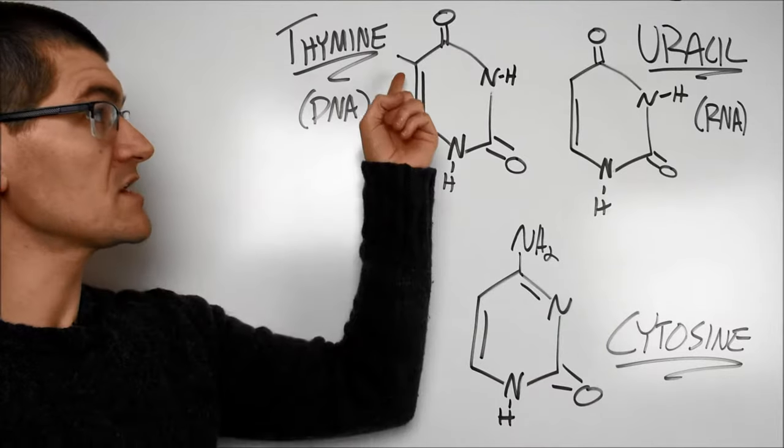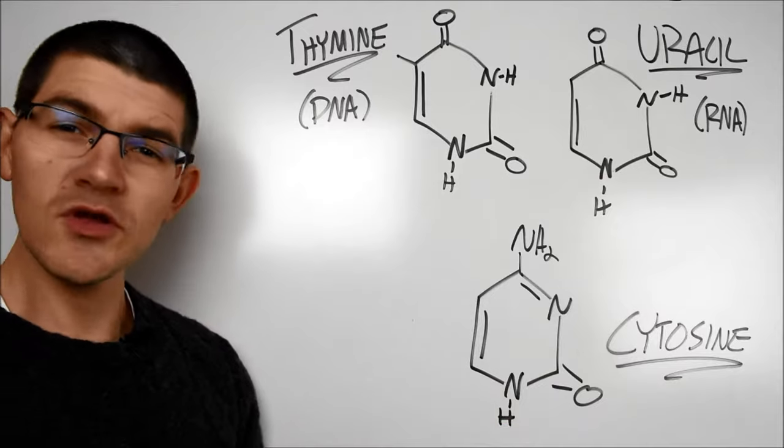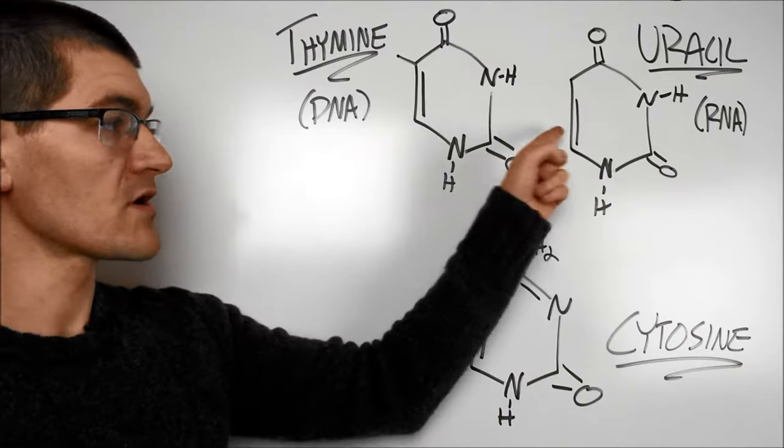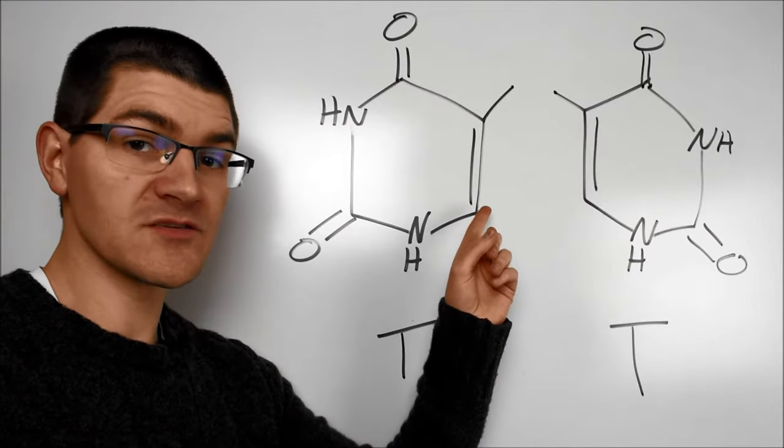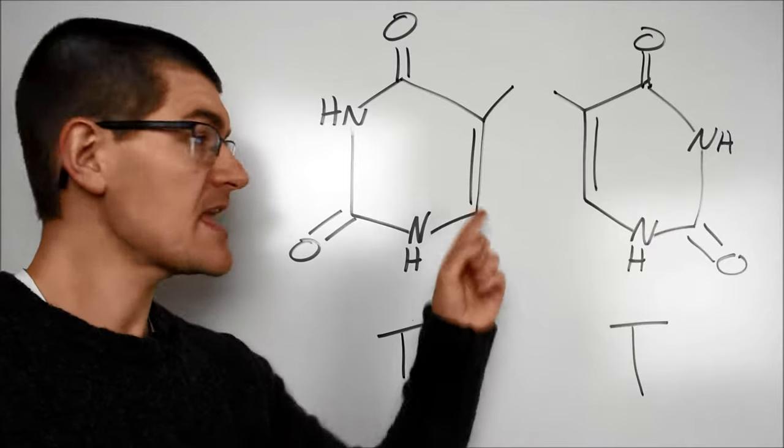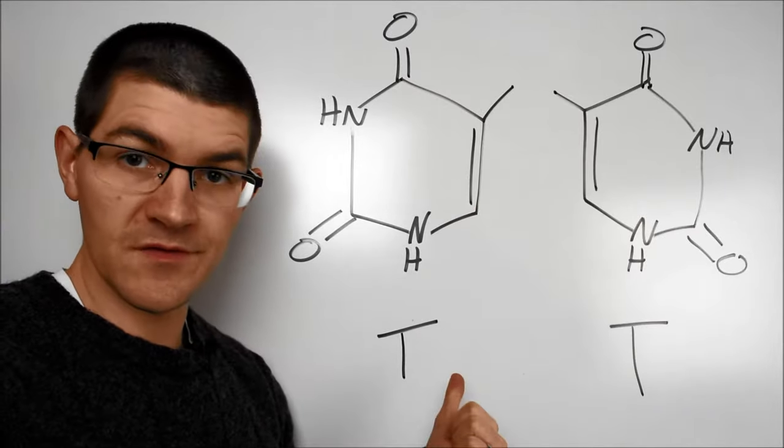Thymine and uracil really only differ by this methyl group here on the thymine. Cytosine, as you can see, is a little bit different, but they all have this general ring structure with the double bond over here. And the double bond here is important, because when the UVB light attacks the pyrimidine base, in this case a thymine, it can cause it to react with an adjacent pyrimidine base. In this case, I've got two thymines here.